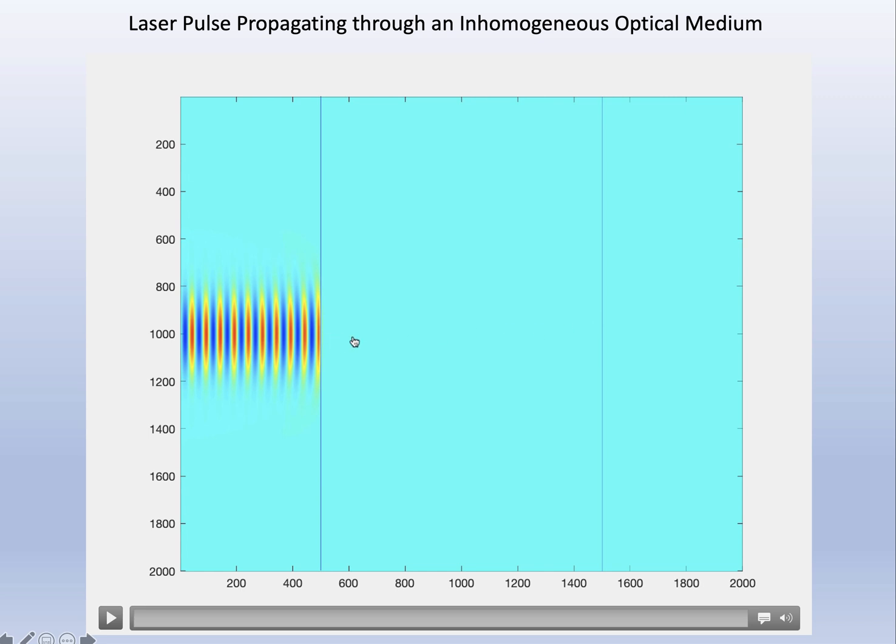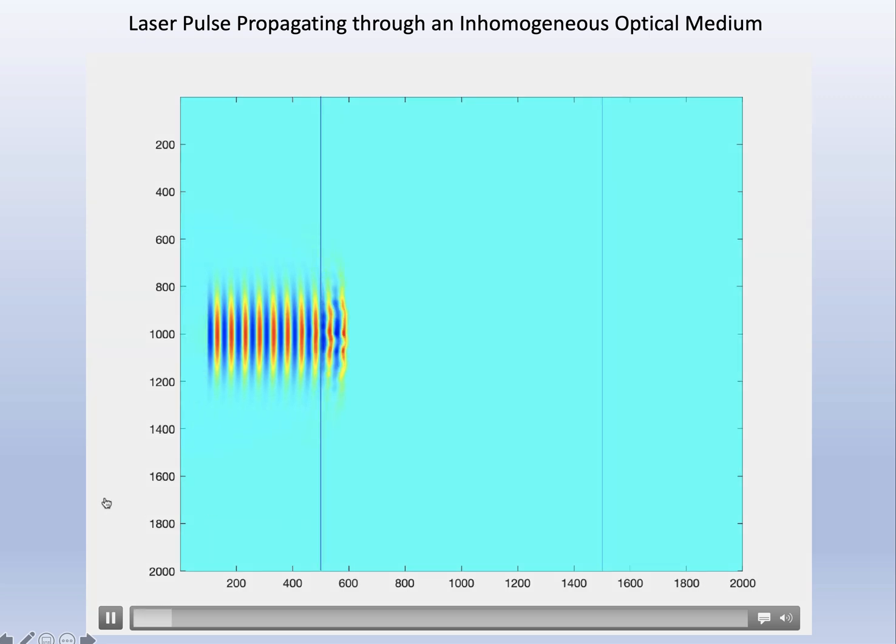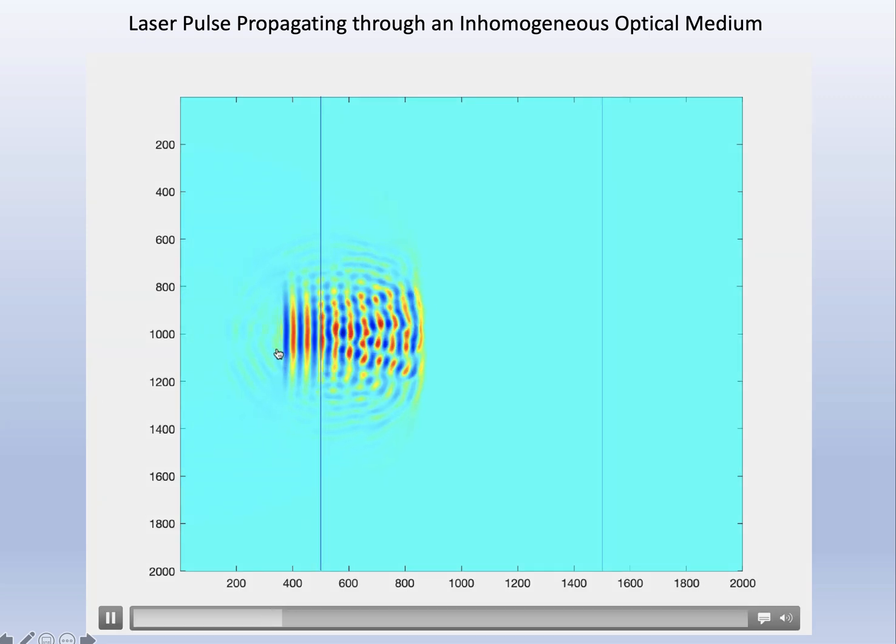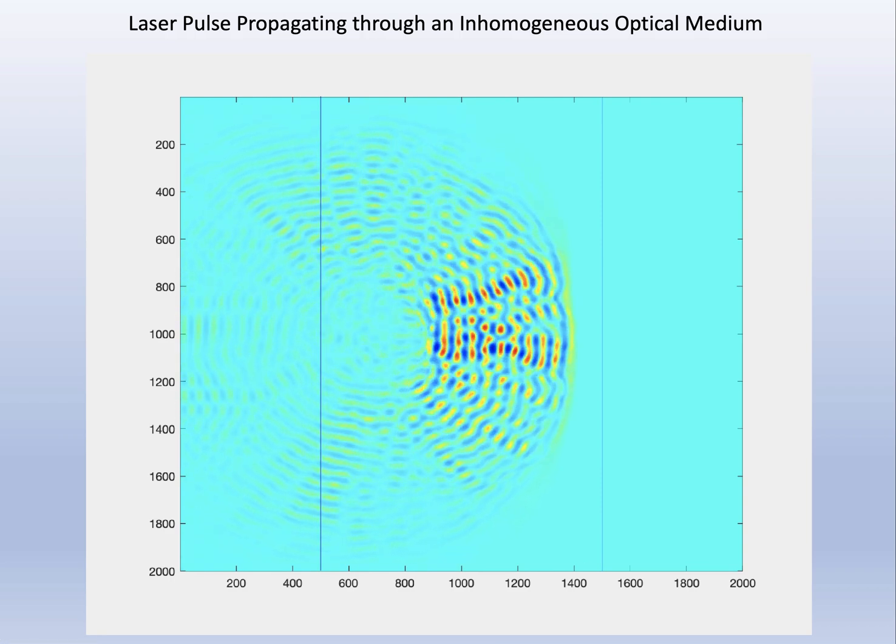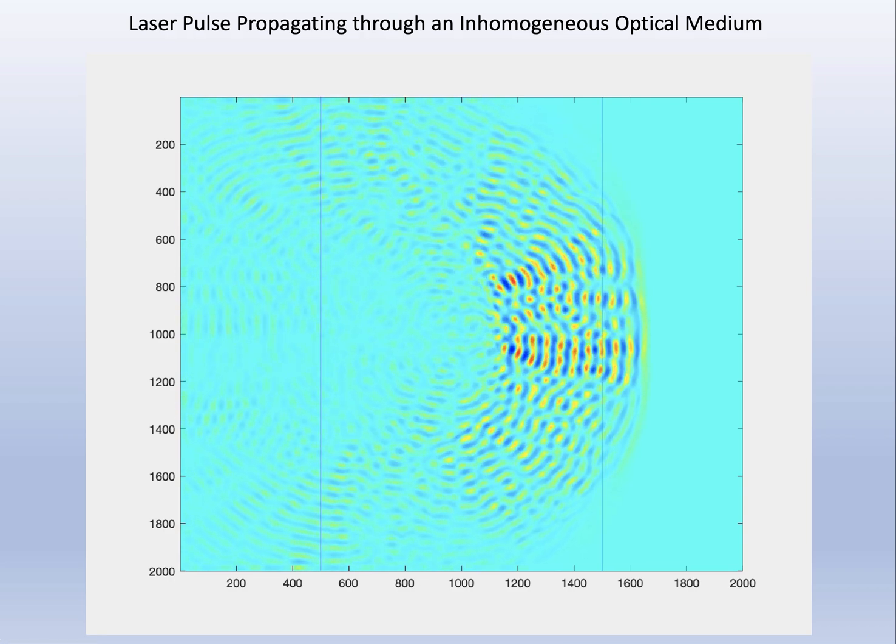I'm not actually showing the refractive index variations, but this essentially has a mottled refractive index pattern. We can let this thing propagate and see that these perfect wave fronts are actually getting distorted - a lot of scattering going on.